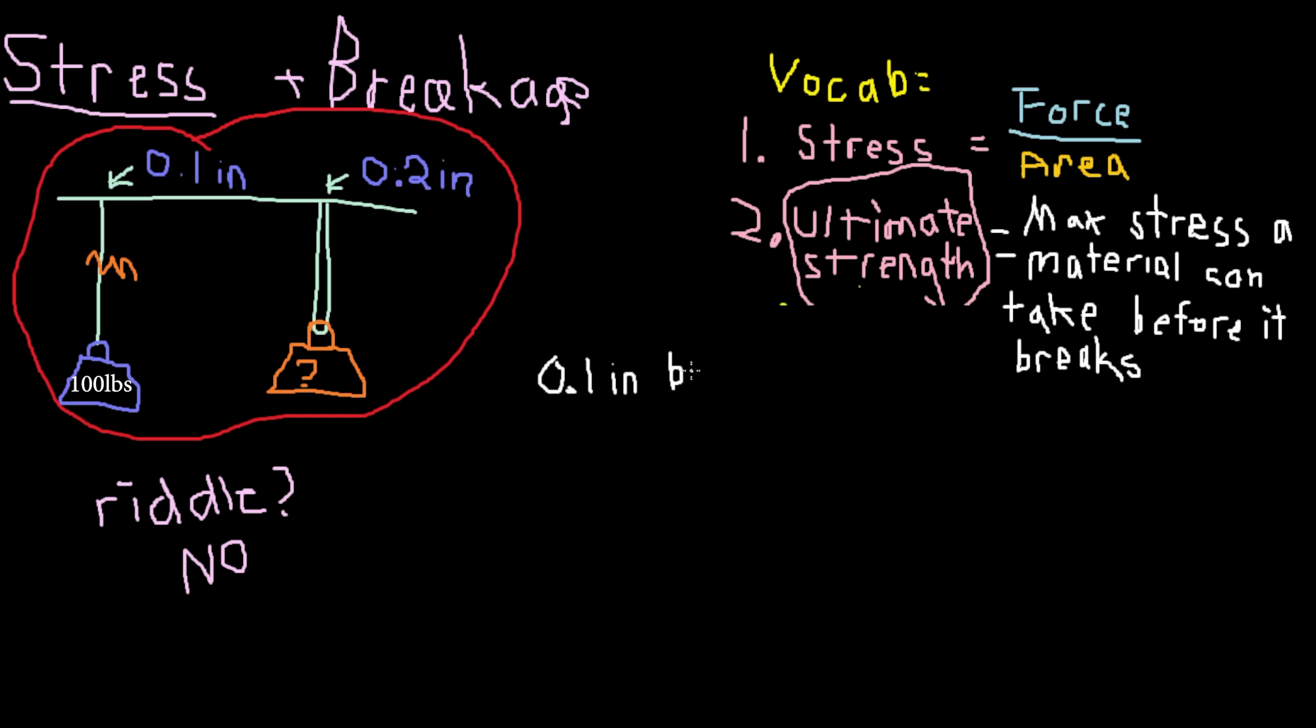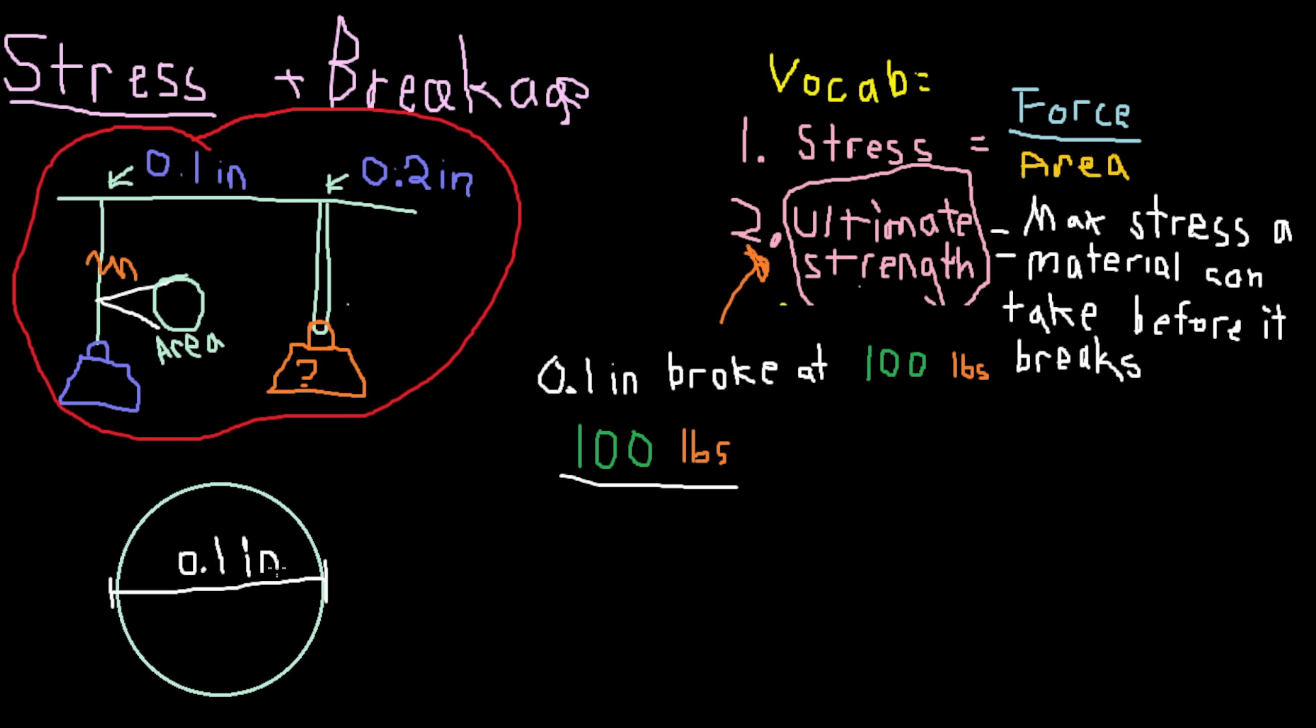We know that the 0.1 inch diameter string broke when a maximum force of 100 pounds was applied to it. If you recall from before, the maximum amount of stress a material can take before it breaks is called the ultimate strength. So, using these two values, we will have to find the ultimate strength. If the string is 0.1 inch diameter, the radius of the string is 0.05 inches. Using the area of the circle formula pi times radius squared, we get a cross-sectional area of 0.0025 pi square inches. I kept the pi as pi because it would make it easier to solve this problem, and I also don't have a calculator with me.